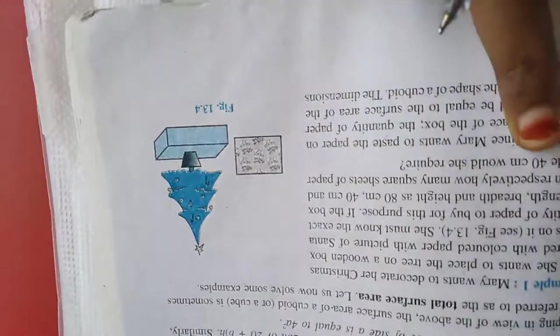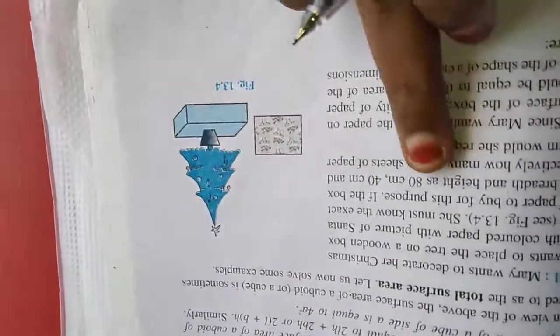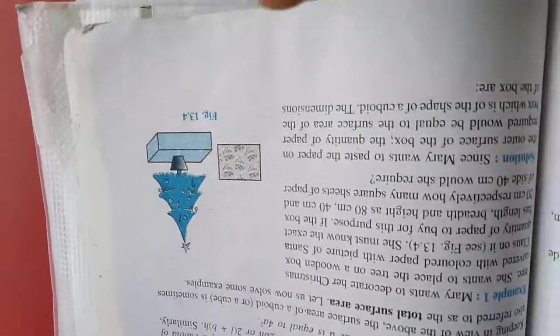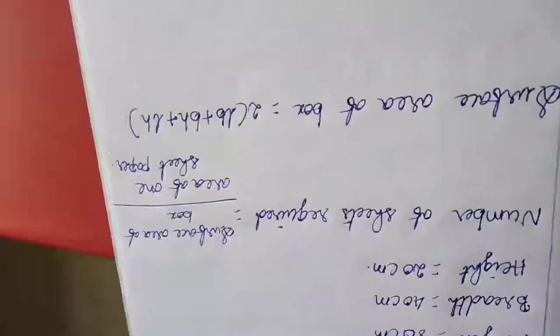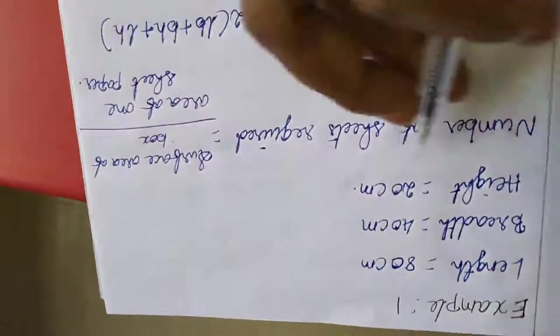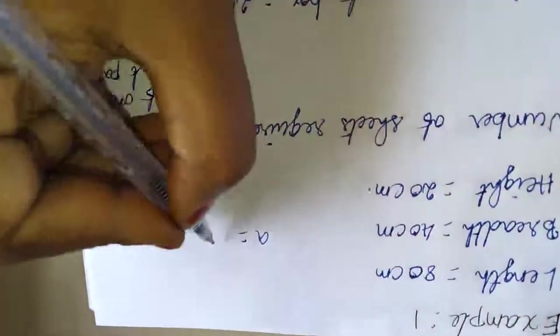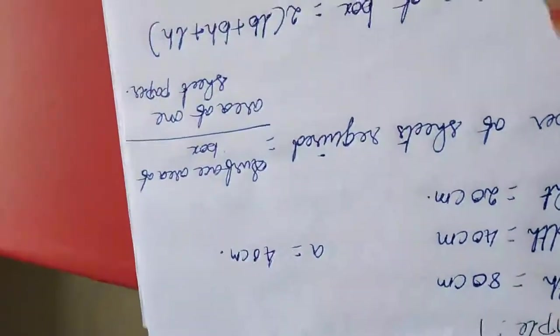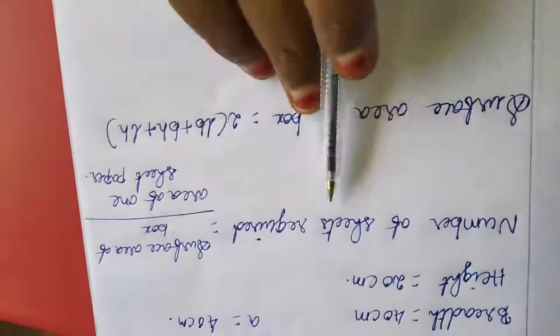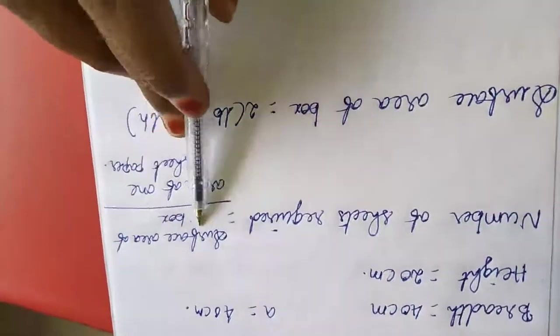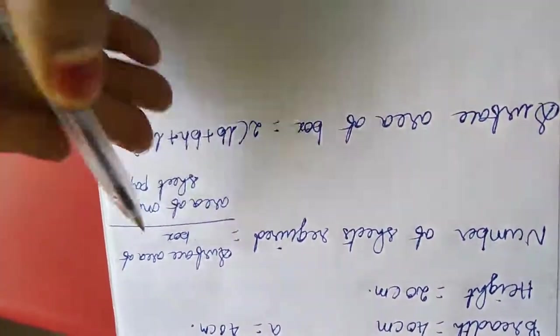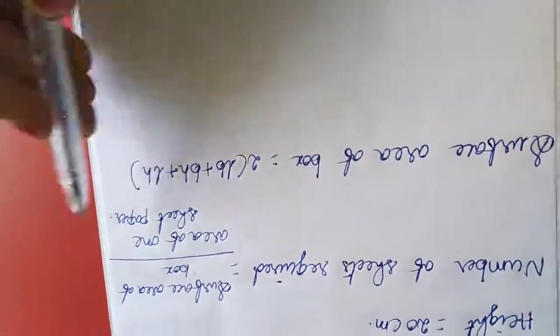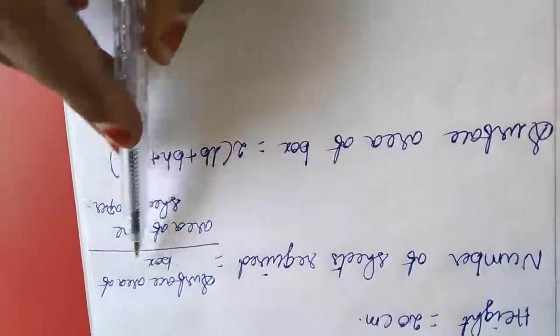If the box has length, width and height as 80cm, 40cm and 20cm respectively, how many square sheets of paper of side 40cm would she require? So first, number of sheets required. For that the formula is surface area of box divided by area of one sheet of paper.